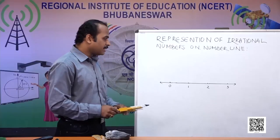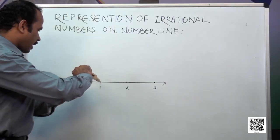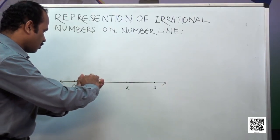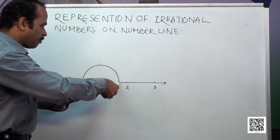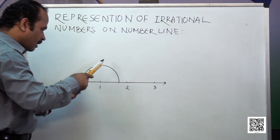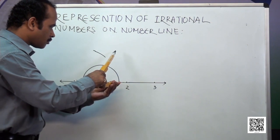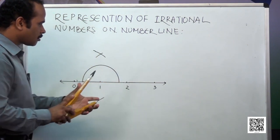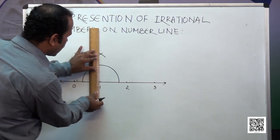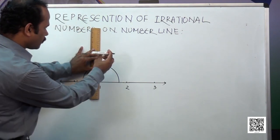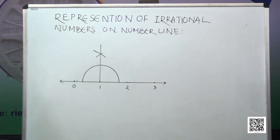In this number line I want to present root 2. Let me select point 1 and start from this point. I will draw a semicircle. With the semicircle I will find the perpendicular on it. Let me bisect the semicircle and join this point to find the right angle. Now I have constructed a right angle here.